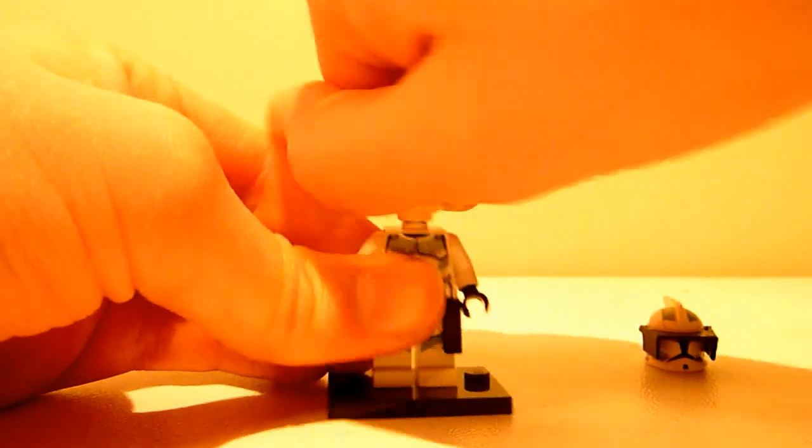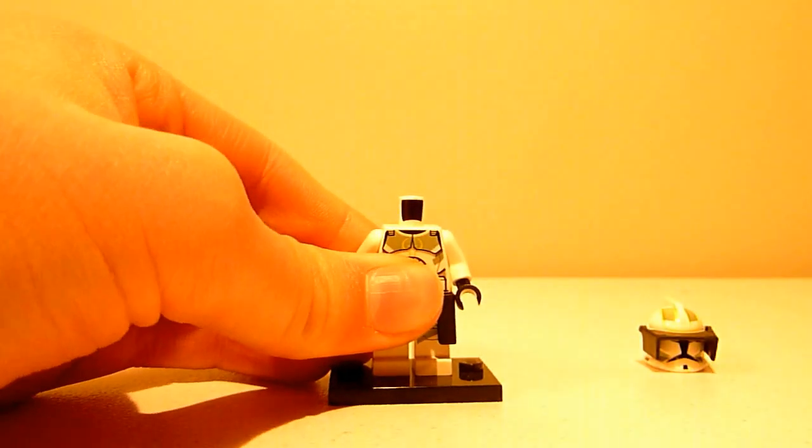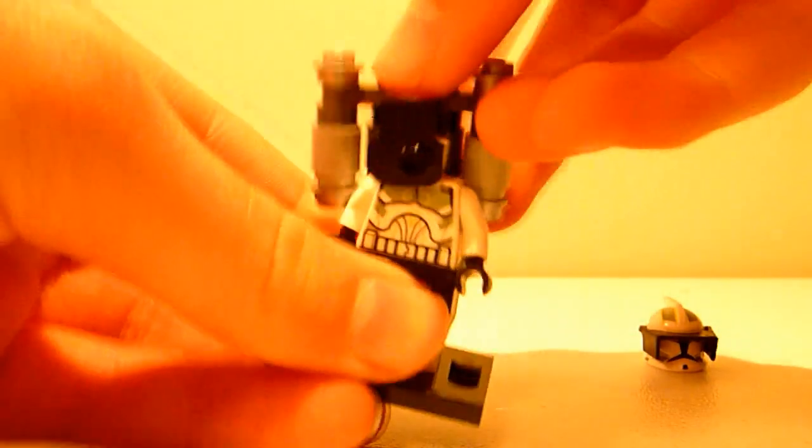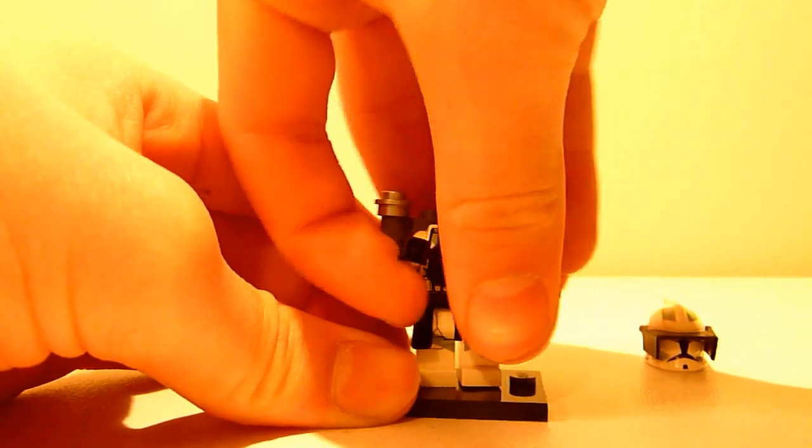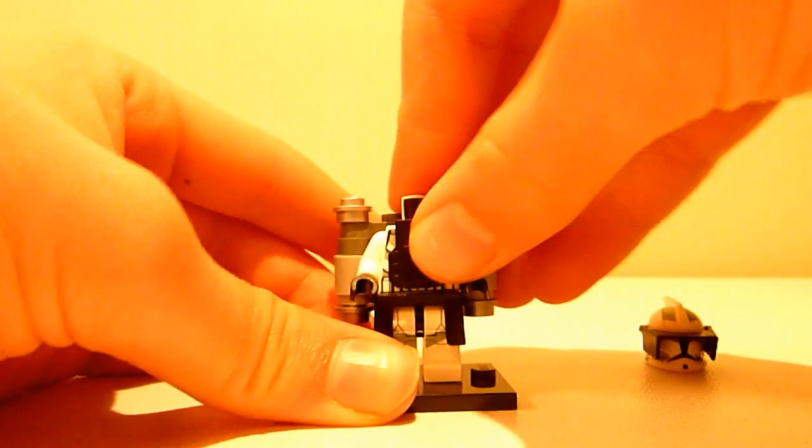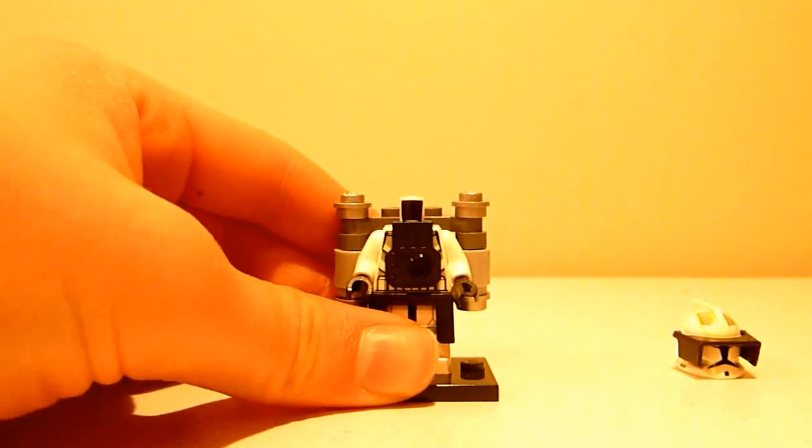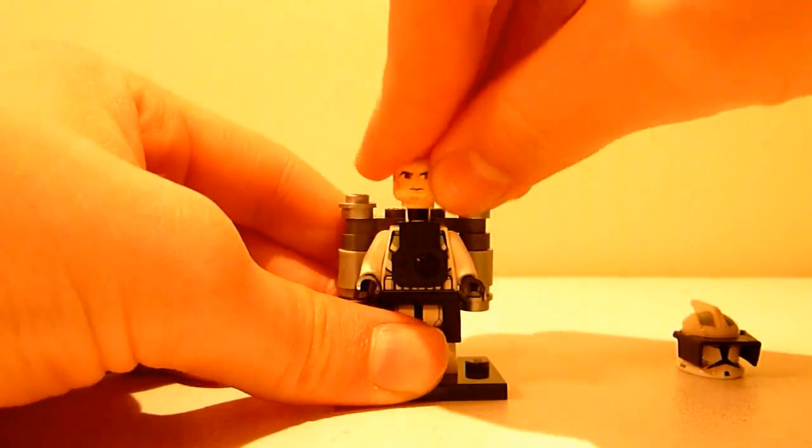So now you're going to take off the head, to put on the jet pack, and you just slip it over. I'll have to move the arms up a little bit to put it on, but it fits perfectly. Then you just put the helmet back on.